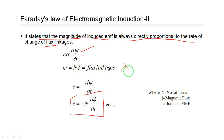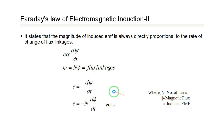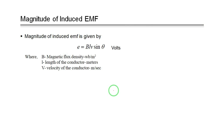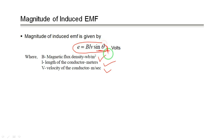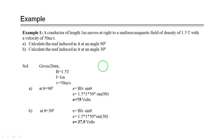Before going to examples, the magnitude of induced EMF is also given by: e = Blv sinθ, where B is the magnetic flux density in webers per meter squared, l is the length of the conductor in meters, v is the velocity of the conductor in meters per second, and θ is the angle. Since this involves sinθ, the output EMF will be a sinusoidal voltage.